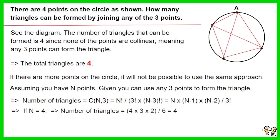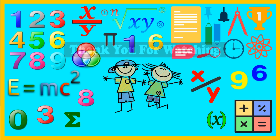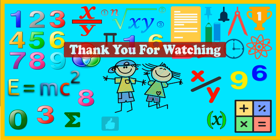Using the formula, if n equals 4, the number of triangles equals 4. Using the formula, if n equals 5, the number of triangles equals 10.